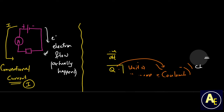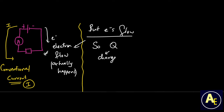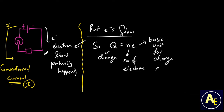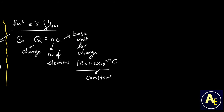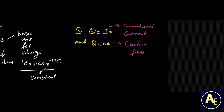From our equation Q = It, this is just one equation for charge. But since electrons are the charges that actually flow through our circuit, we can note that Q also equals ne, where n is equal to the number of electrons and e is the basic unit for charge, which is 1.6 × 10⁻¹⁹ coulombs — a constant. So at any given point in time these two equations are equal to each other.